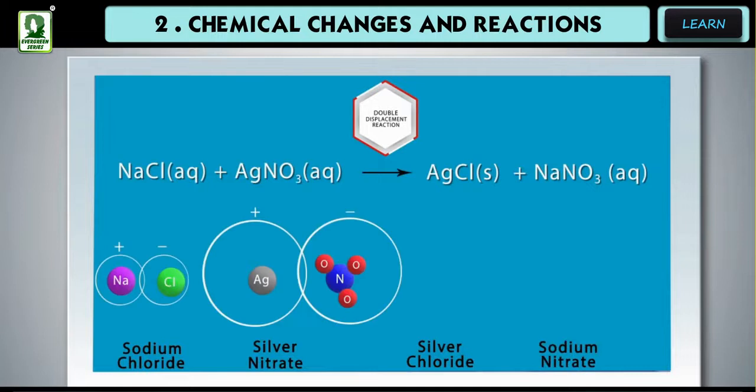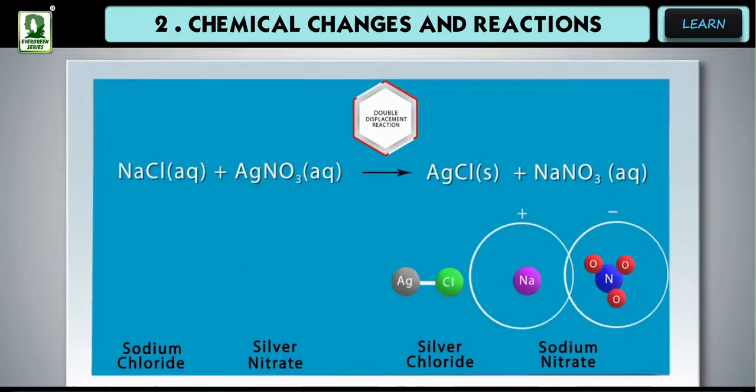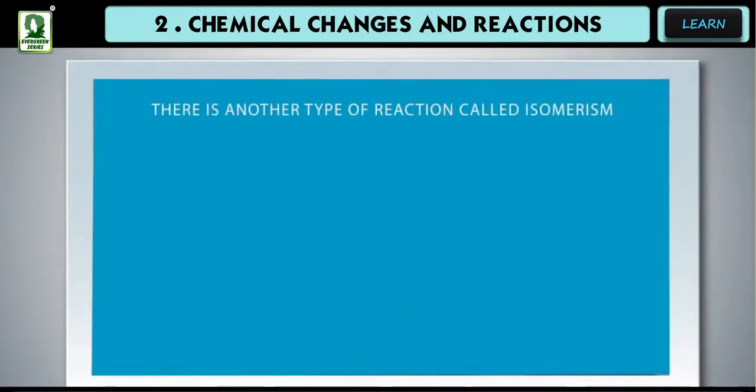Example: sodium chloride and silver nitrate react together to form silver chloride and sodium nitrate. There is another type of